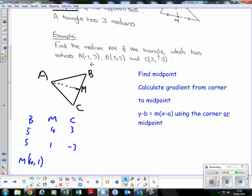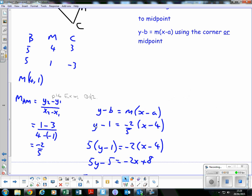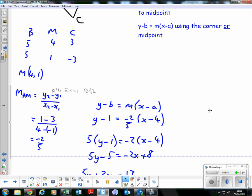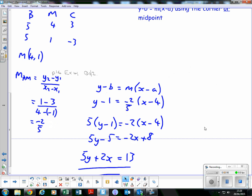Because A has a negative x-coordinate, using M reduces the possibility of anything silly happening with negative numbers. Substitute in: y - 1 = -2/5(x - 4). Cross multiply by 5: 5(y - 1) = -2(x - 4).